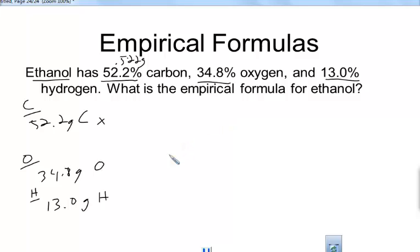Change it to moles, get the lowest whole number ratio, and figure out your empirical formula from that. So that is what I'd like you to do to complete this sheet, is to figure out the empirical formula for ethanol, showing all of your work for changing it to moles, and then dividing by the lowest amount of moles, and figuring out what that final empirical formula should be for ethanol. Thank you.